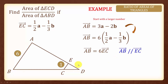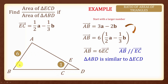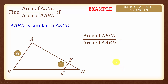It also means that AB is parallel to EC. Therefore, triangle ABD is similar to triangle ECD because these two lines are parallel. These two corresponding angles will be the same, likewise for the other corresponding angles, and using the similarity test AAA, we know the two triangles are similar. So area of triangle ECD over area of triangle ABD equals 1 over 6 squared, which is 1 over 36.